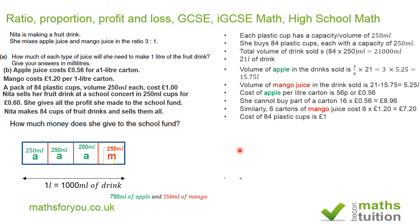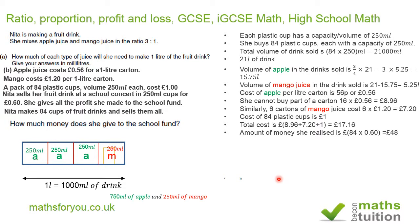Don't forget the 84 plastic cups cost £1.00. So our total cost is: £8.96 for the apple juice, plus £7.20 for the mango juice, plus £1.00 for the plastic cups — giving a total cost of £17.16. She sells 84 cups at £0.60 each, realising £48.00 in total revenue. Therefore, the profit is £48.00 minus £17.16, which gives a profit of £30.84.